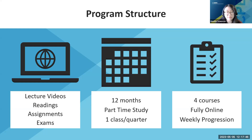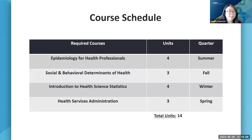This program is designed to be finished in 12 months, taking one class a quarter. As we progress along, we may look into offering classes more frequently so you could potentially finish faster by doubling up a quarter. Here's the schedule: starting in summer with Epidemiology for Health Professionals (4 units), fall with Social and Behavioral Determinants of Health (3 units), winter with Introduction to Health Science and Stats, and spring with Health Services Administration — for a total of 14 units, all online and all asynchronous.